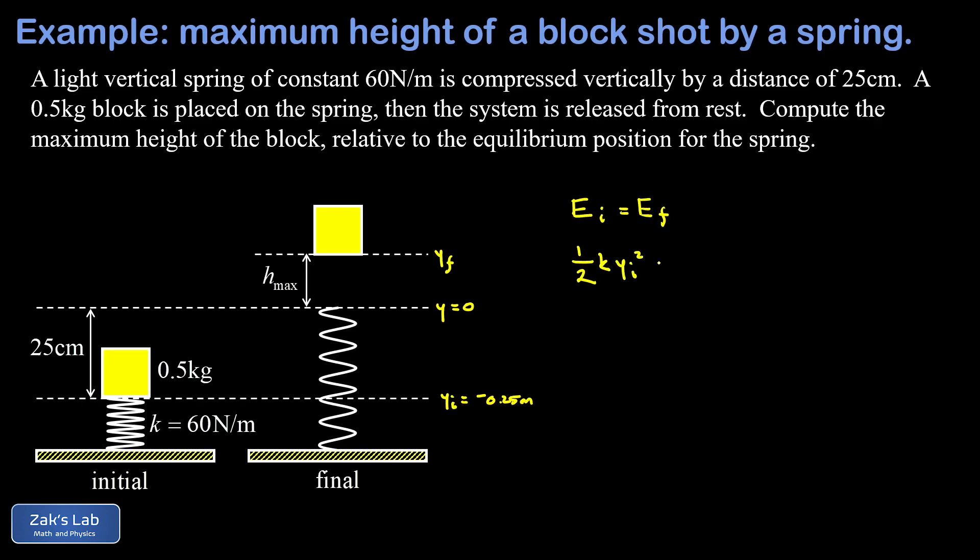We add to that the gravitational potential energy in this initial state. So that's mg times the y coordinate, which happens to be negative. So I did write plus there, but y initial is negative. So there's our negative initial potential energy because we're below the origin.